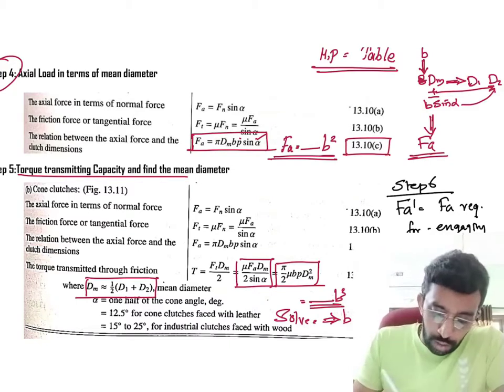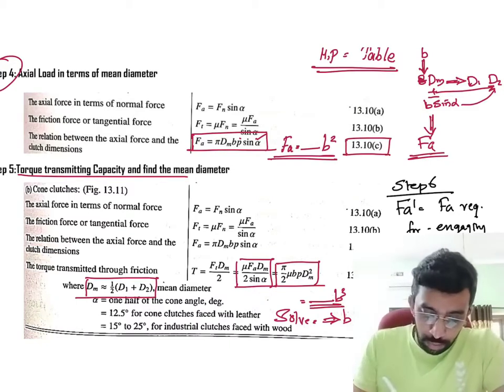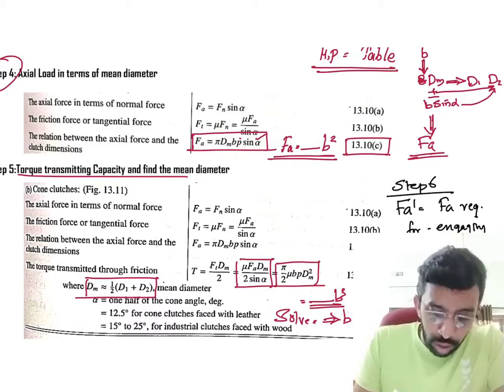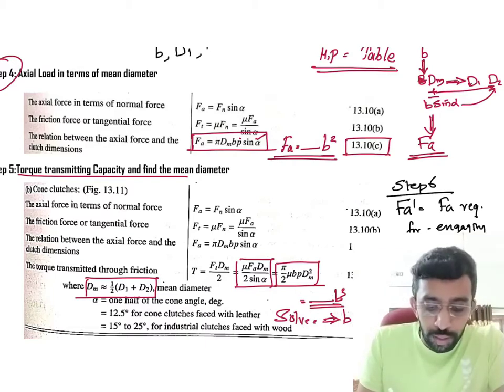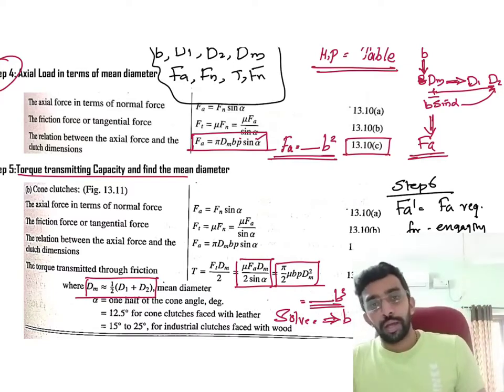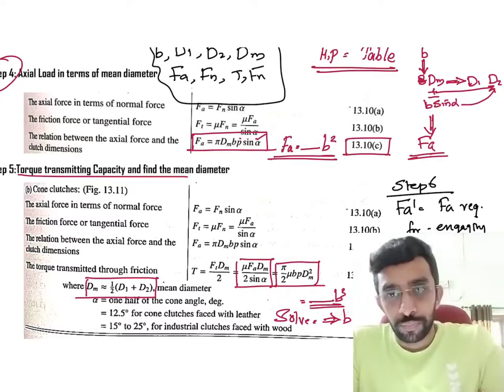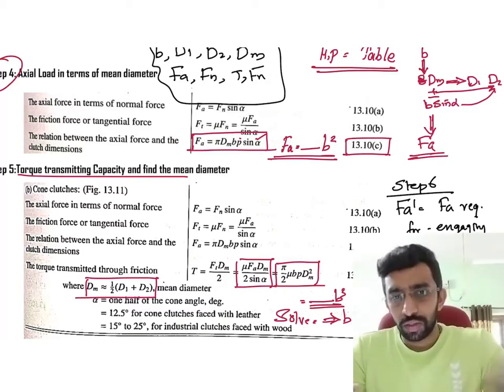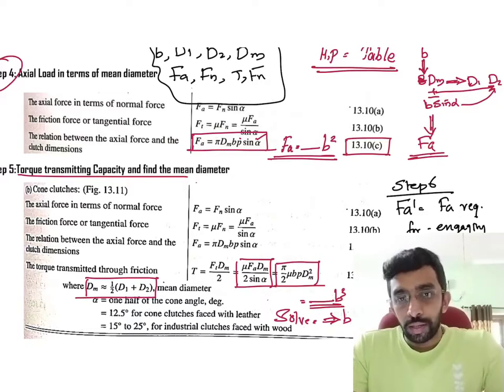After step number six, make sure that you have the value of b, you have the value of d1, d2, dm, F_a, F_n, torque, and finally, F_a'. All these values should be there and you should rewrite this also. That is the design procedure. It's a very simple design procedure. Only thing is that the way in which we find the value of d1 and d2 is slightly different.